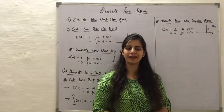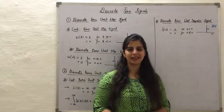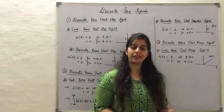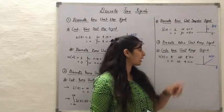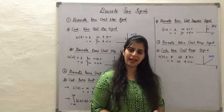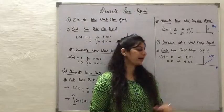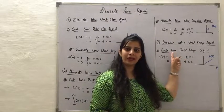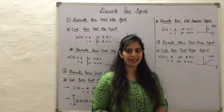The next important signal is the discrete time unit ramp signal. It is very similar to the continuous time unit ramp signal, except that t is replaced by n, since in the discrete time domain n can only take integer values.